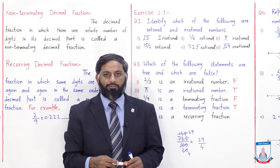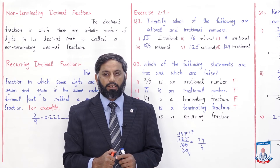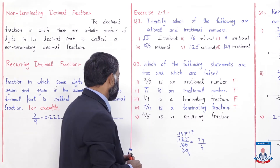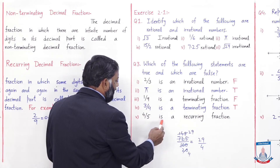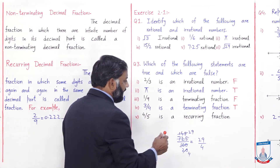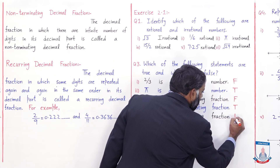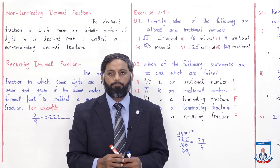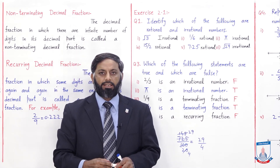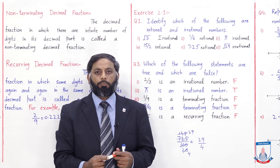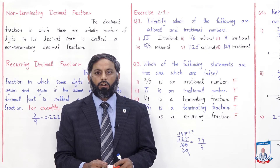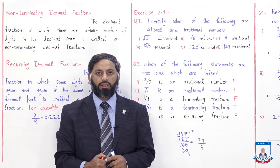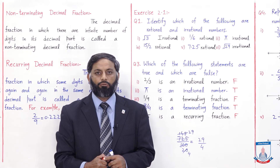0.75 کے decimal part میں digits finite ہیں، لہذا یہ terminating fraction ہے۔ پانچواں statement: '4/5 is a recurring fraction' — یہ false ہے کیونکہ 4÷5 = 0.8 آتا ہے، جس کے decimal part میں digits finite اور countable ہیں — یہ terminating decimal fraction ہے۔